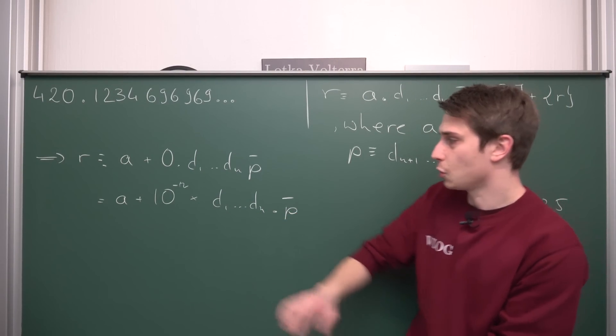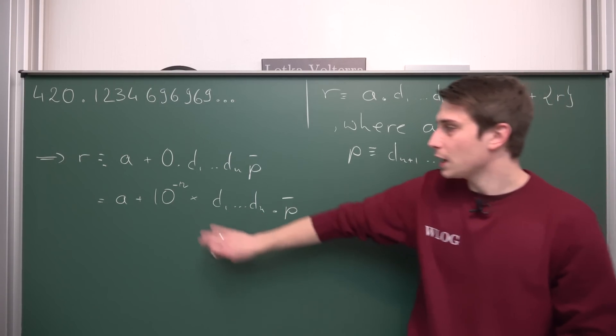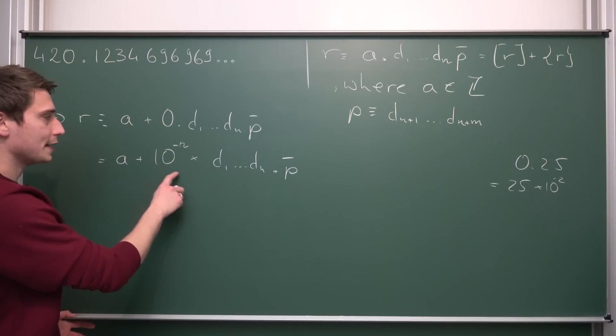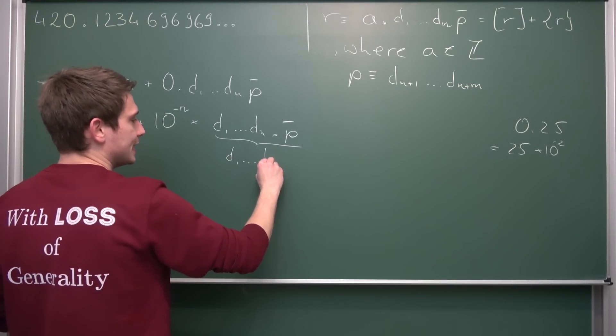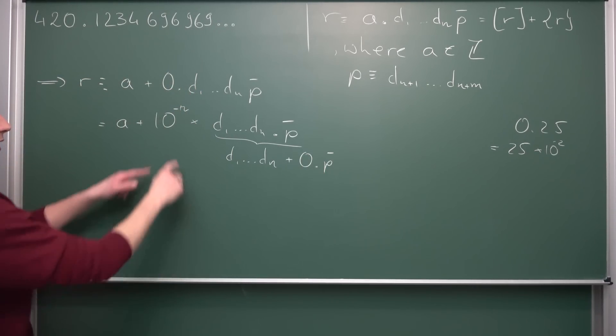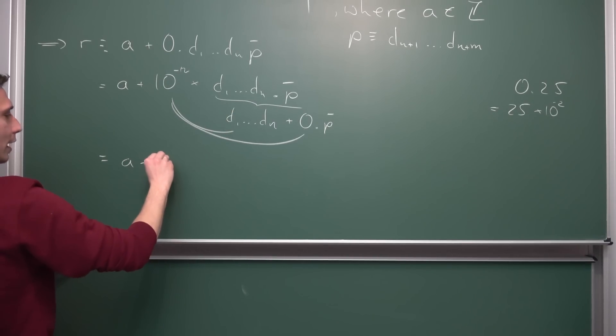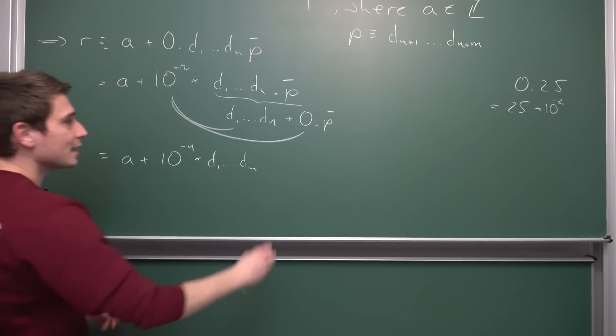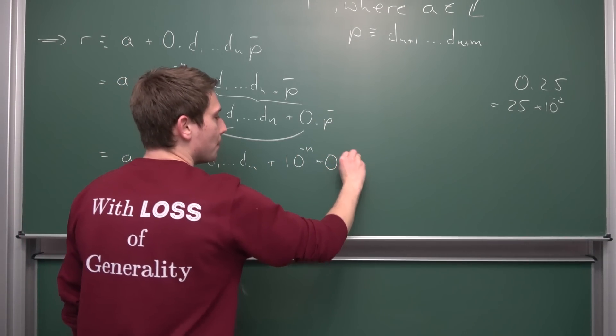Now, what we got here is basically once again the situation that we had up here. This right here is just basically now an integer part plus some kind of fractional part. Let us ignore the 10 to the negative nth power and let's treat it like what we have up here, and then at the end we are just going to multiply the 10 to the negative nth power in. So what we have here is nothing other than D1 concatenated up until Dn, and then all of this added to O dot P periodic, meaning if we were to multiply the 10 to the negative nth power in, we are going to get A plus 10 to the negative nth power multiplied with D1 concatenated up until Dn, and then plus 10 to the negative nth power times 0 dot P periodic.